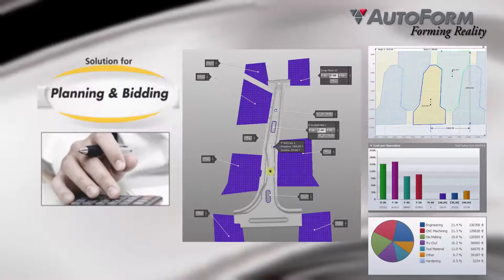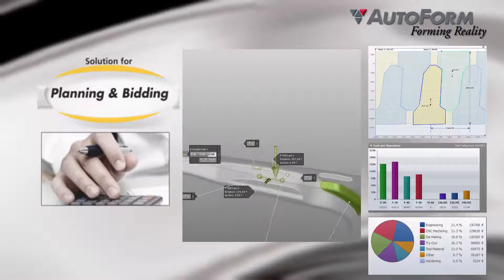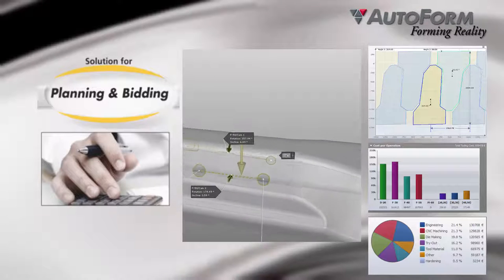AutoForm solution for planning and bidding enables sheet metal planners to estimate tool costs, material costs, and piece costs for the production of sheet metal stamped components.